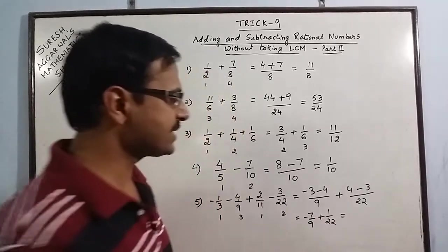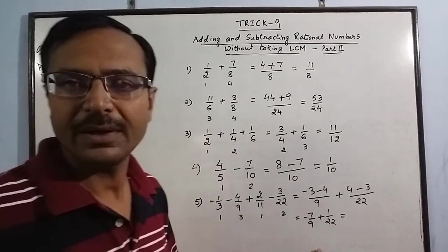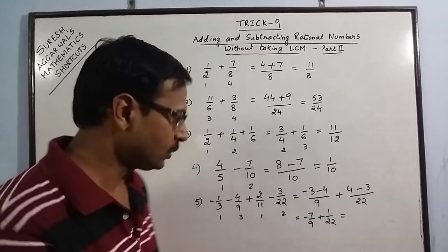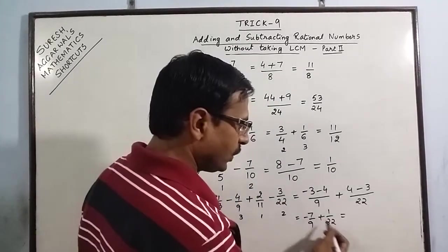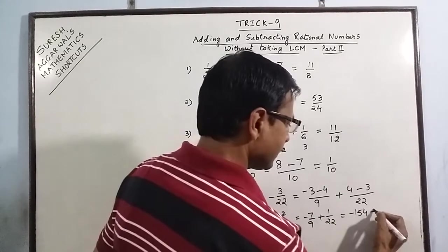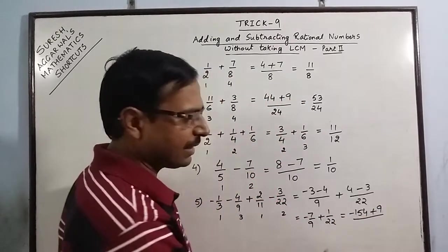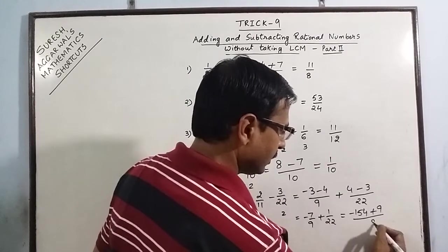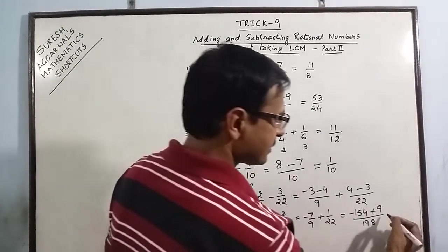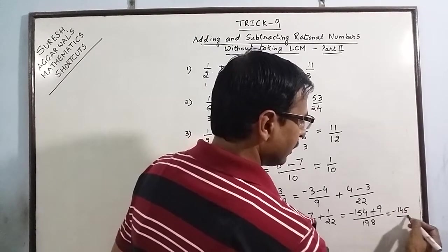And now we notice that 9 and 22 do not have a common factor between them, so we can apply the method as I told you in trick number 8. So 22 into 7 gives 154 plus 9 into 1 gives us 9, and in the denominator we have 22 into 9 which is 198. So the final answer is minus 145 upon 198.